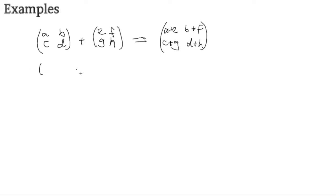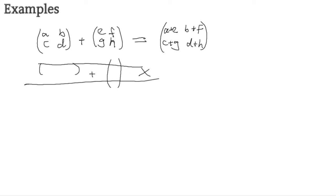If you have, say, a row matrix and a column matrix of different sizes, that doesn't exist — there's no such thing, so cross that out completely. Make sure dimensions match for addition. Again, very important to remember. Once addition is done, subtraction is exactly the same, except with negative signs.